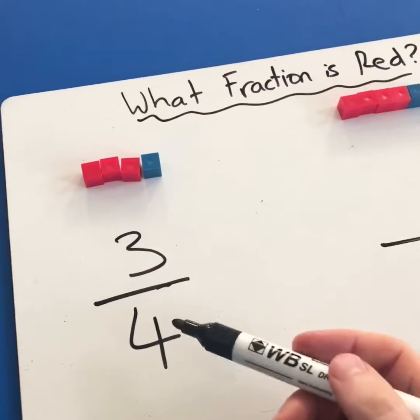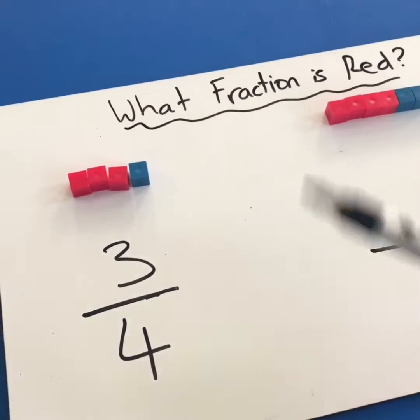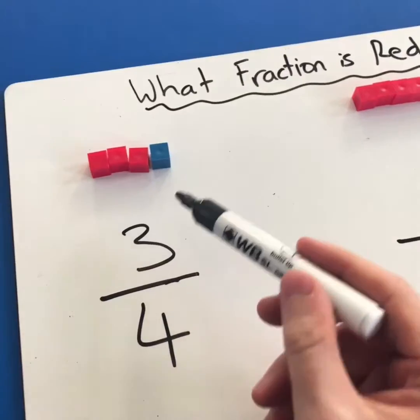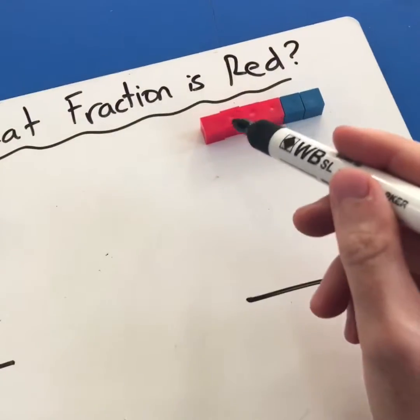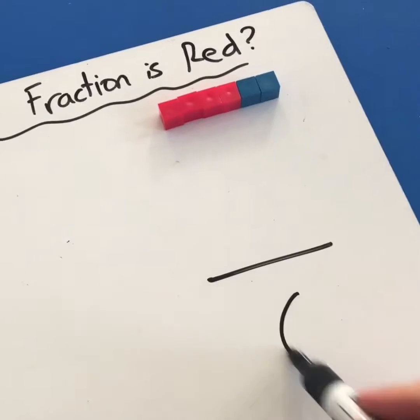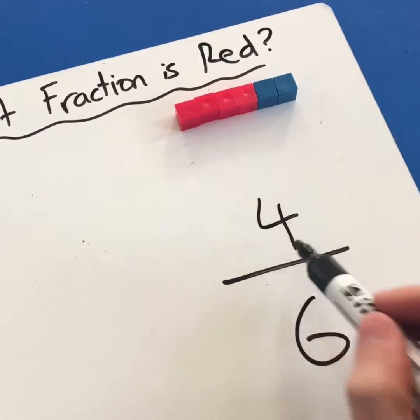A good way to teach about denominators and numerators is to use concrete materials, so they can actually count. There are four pieces here and three of them are red. There are one, two, three, four, five, six of these and four of them are red.